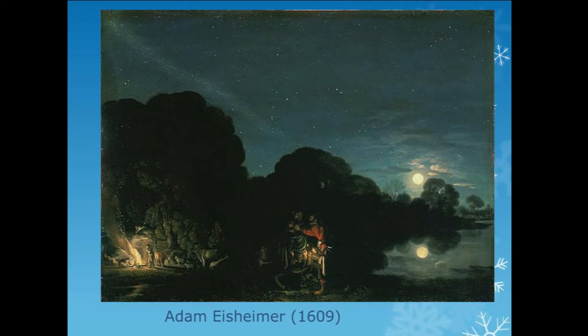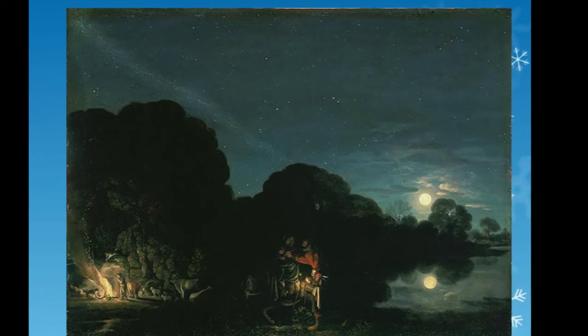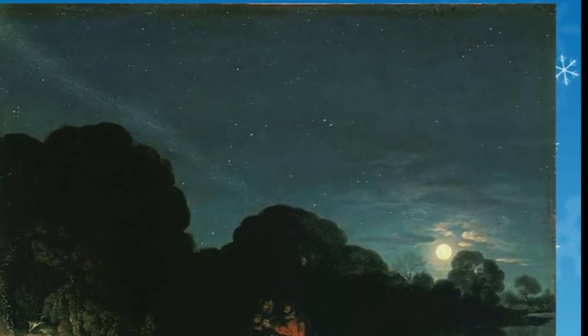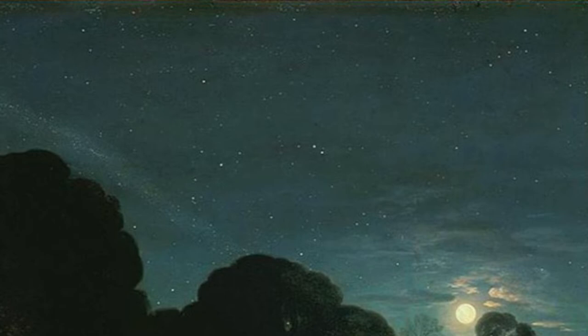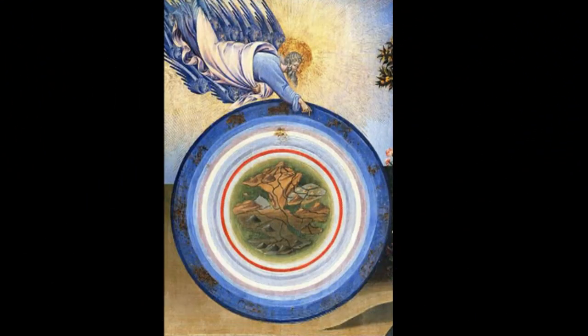This painting by Adam Eisheimer, dated 1609, attracts attention for the beautiful rendering of light and shades because of the full moon and campfire. A careful look at the sky shows stars of Leo, Ursa Major, and other constellations.